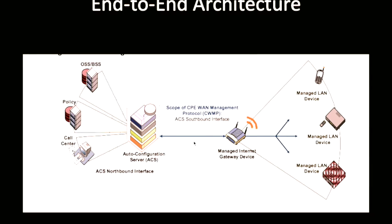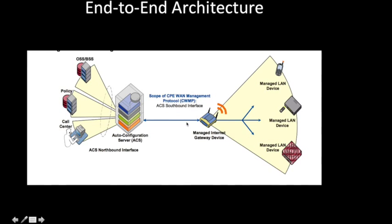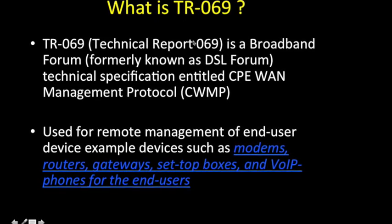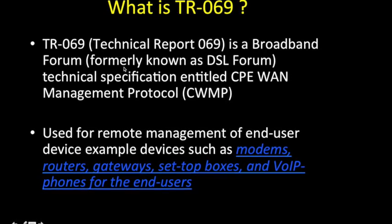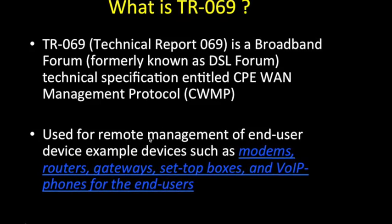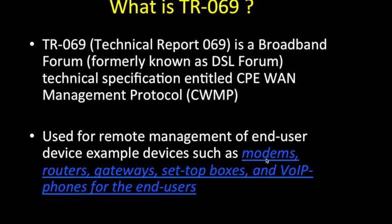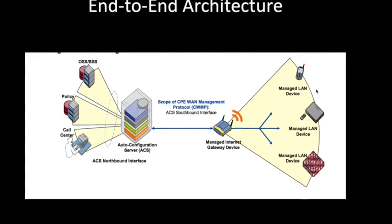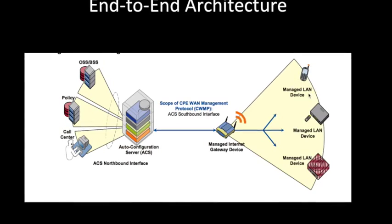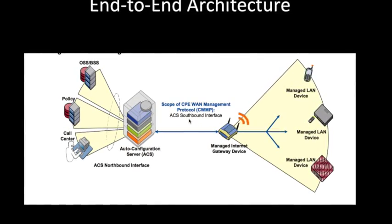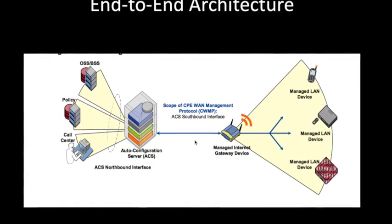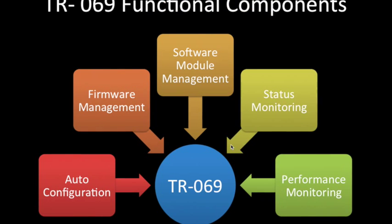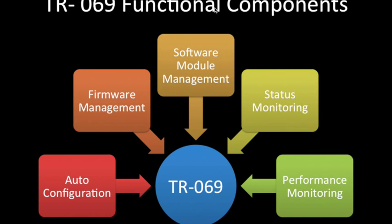This is the scope of the CPE WAN Management Protocol — from the managed device to the ACS — and it is bi-directional. By definition, TR-069 stands for Technical Report 069, a Broadband Forum (known as DSL Forum) standard used for management of end-user devices such as modems, routers, gateways, set-top boxes, and VoIP phones. We control all these managed devices using the CWMP protocol defined in TR-069, which governs communication between the ACS and managed devices.